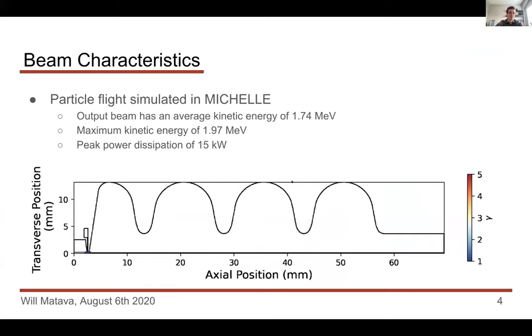Now that we have a fully defined electric field and we're able to pull off electrons, we can actually simulate the particle flight. This was done in Michelle. I have a nice little animation of this. We can see three different pulses, and the color parameterizes this gamma value. Gamma is just a relativistic correction, a value that's directly proportional to a particle's total energy. The output beam at the end has an average kinetic energy of 1.74 megaelectron volts and a maximum kinetic energy of 1.97 megaelectron volts. This amounts to a peak power dissipation of about 15 kilowatts.